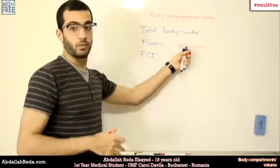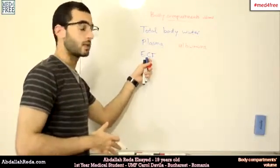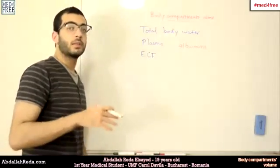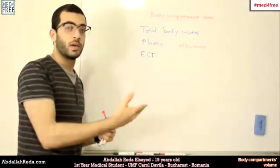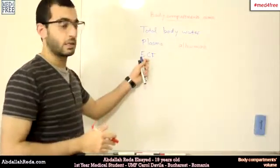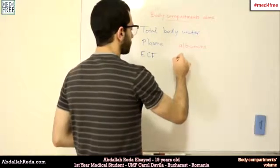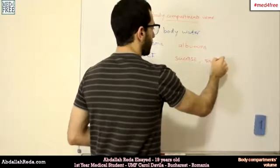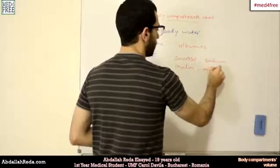For the extracellular fluid, we need something permeable through capillary walls (since plasma is included) but not permeable through cell membranes, so it doesn't enter the intracellular compartment. We can use substances like sucrose, pseudone, inulin, mannitol, and similar compounds.